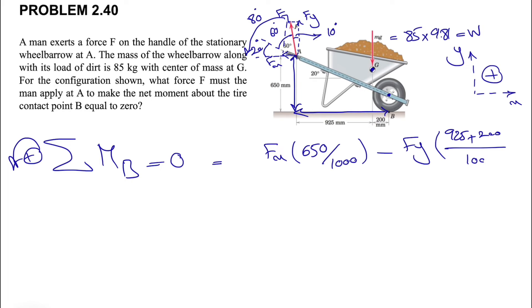This is our Fy, which means the moment will be in this direction, which is clockwise. That's why we consider a negative sign here. The distance here will be the distance I'm showing, which is 925 plus 200 divided by a thousand.